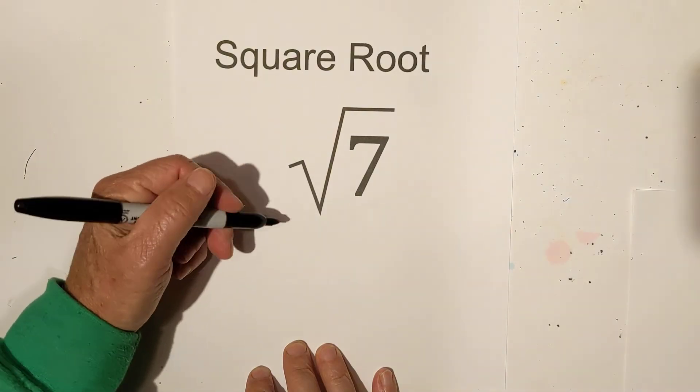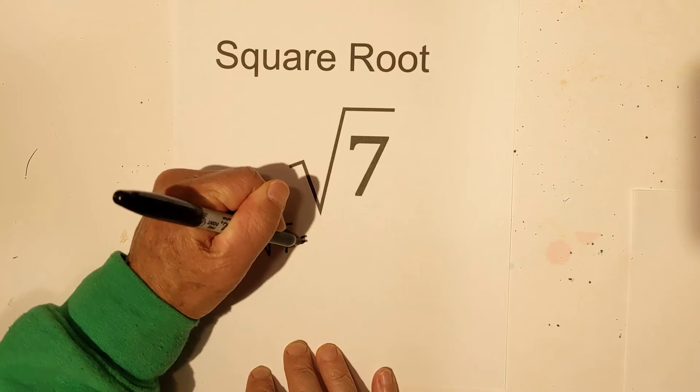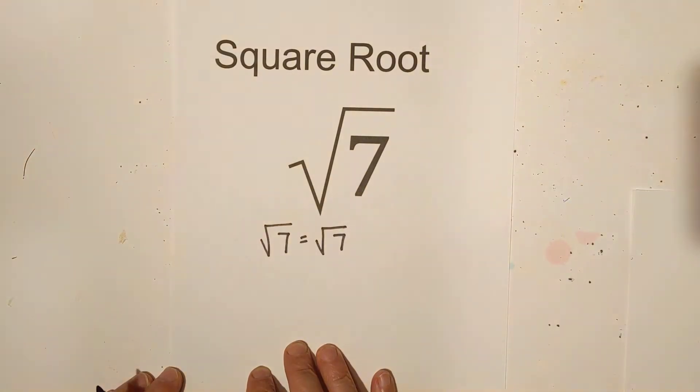Square root of 7. 7 is not a perfect square, so if you want it simplified, the square root of 7 simplified is the square root of 7.